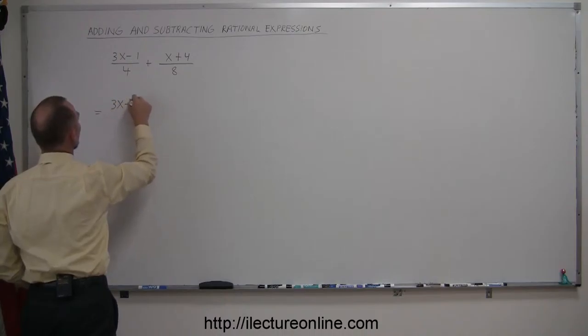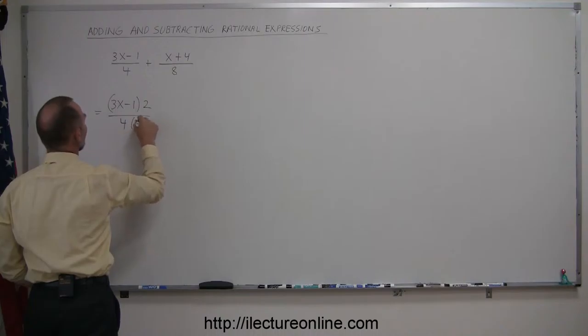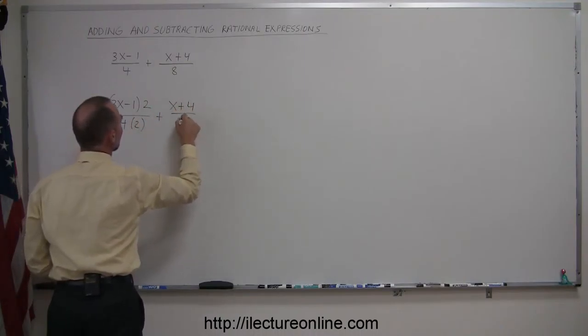So, this becomes 3x minus 1 multiplied times 2 divided by 4 multiplied times 2. And that we add to that what we have on the right side, x plus 4 over 8.